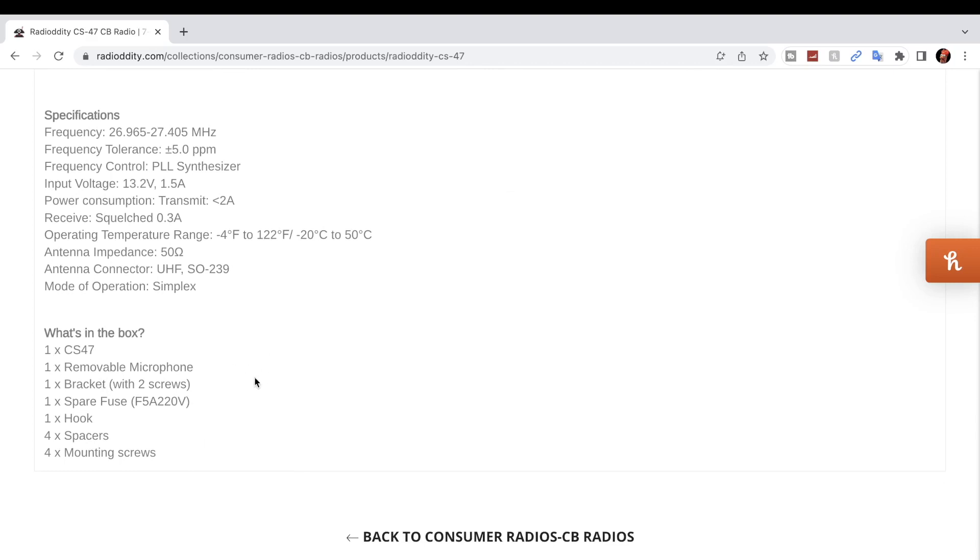Again shows you what's in the box when you get it: the radio, removable microphone, bracket, spare fuse, hook, and spacers for the mounting bracket and mounting screws.